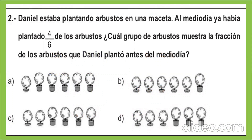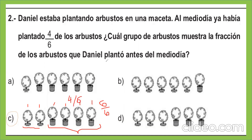Daniel estaba plantando arbustos en una maceta. Al mediodía ya había plantado cuatro sextos de los arbustos. ¿Cuál grupo de arbustos muestra la fracción de los arbustos que plantó antes del mediodía? La letra C. ¿Por qué? Porque de los seis arbustos que él tenía, ha plantado solo cuatro arbustos en una maceta. Le faltaban dos para que sean seis sextos, pero él ha plantado solo cuatro sextos.